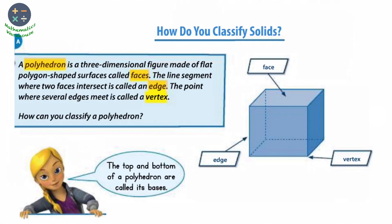Now a polyhedron is a three-dimensional figure made of flat polygon-shaped surfaces called faces. The line segment where two faces intersect is called an edge. The point where several edges meet is called the vertex. As you can see here, the edge is a line segment in which two faces intersect, and this point in which two edges intersect we call it vertex, and the planar side we call it face.